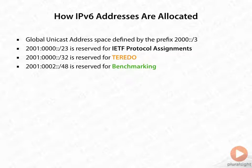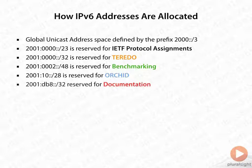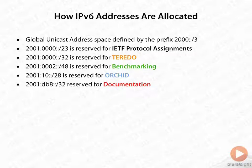We have the 2001:2::/48 reserved for benchmarking, the :10/28 reserved for ORCID, and 2001:DB8::/32 used for documentation. You'll notice that I've used that DB8 address in our examples here because it's a form of documentation or training.